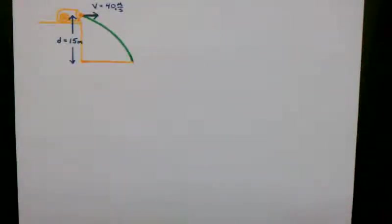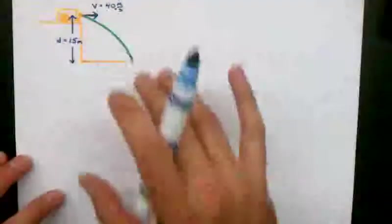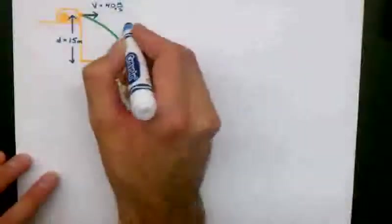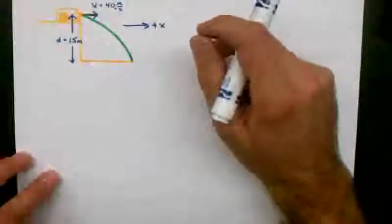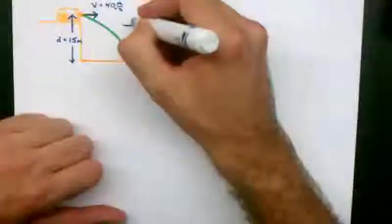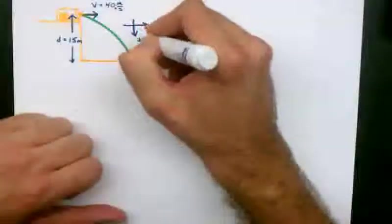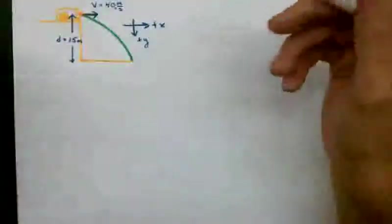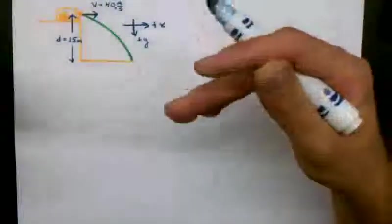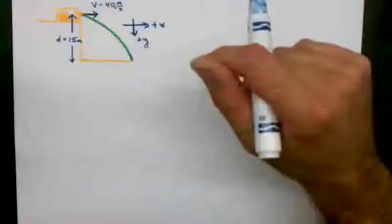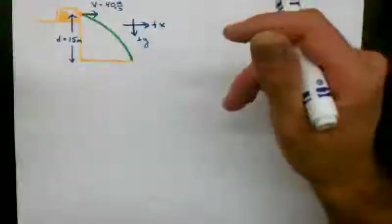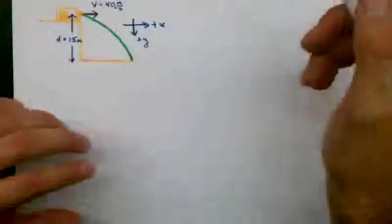The first thing to do when doing a problem in which a projectile moves in two dimensions, in both the x and the y dimension, is to assign positive directions for each. For this problem, I'll make to the right the positive x direction, and I'm going to make downward the positive y direction. And the reason I do that is because nothing in this problem moves upward. The cannonball at no point is moving upward, the acceleration due to gravity is always downward, and the distance it moves is downward. So there's no reason to make up the positive direction.